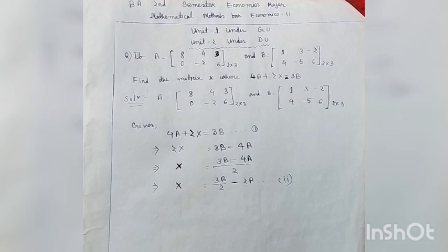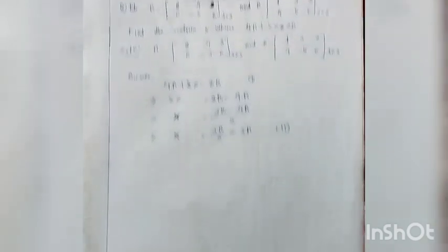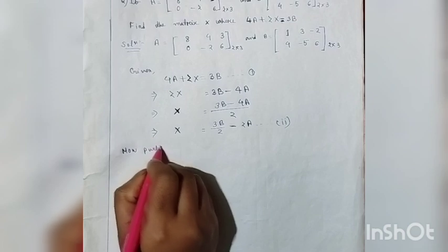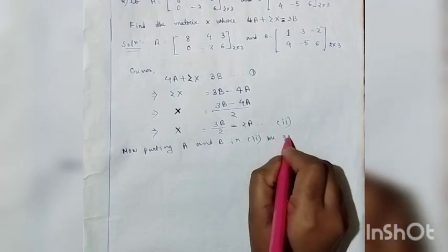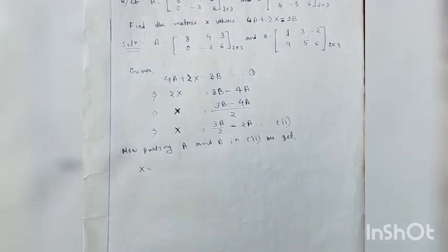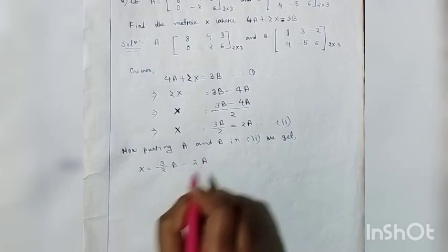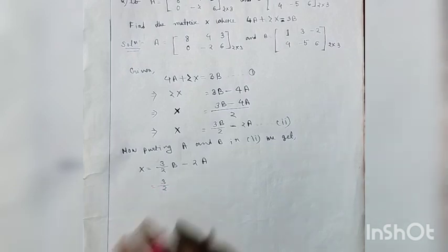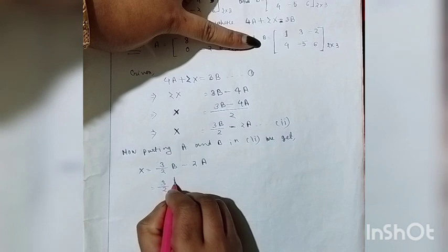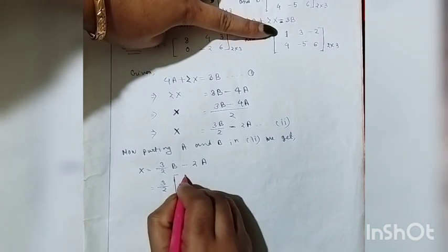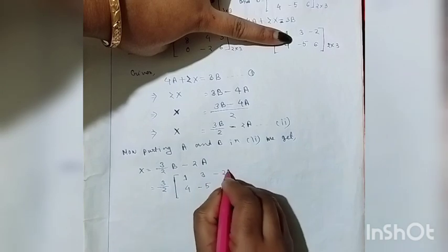Now putting the values of A and B into the equation, matrix X equals (3/2)B minus 2A. So we write out the two matrices with their scalar multipliers. We expand: (3/2) times matrix B, minus 2 times matrix A.